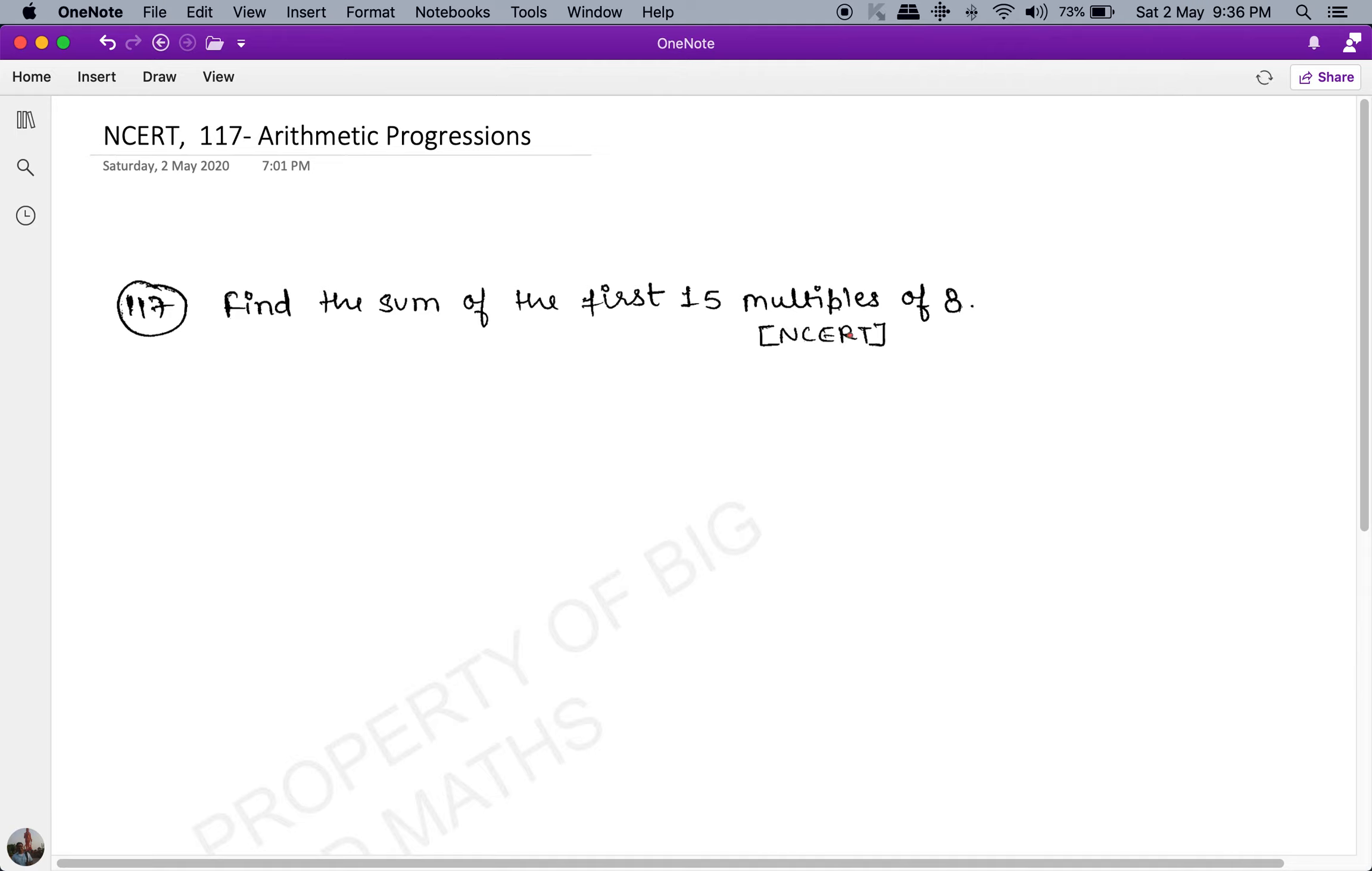Let's start solving this one. This is an NCERT question and it says: find the sum of the first 15 multiples of 8. Now, the formula that we're going to use is Sn = n/2 multiplied by [2a + (n-1)d]. Okay, now Sn is what you have to find.